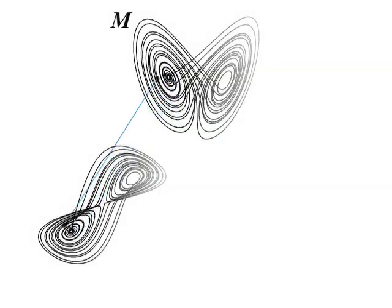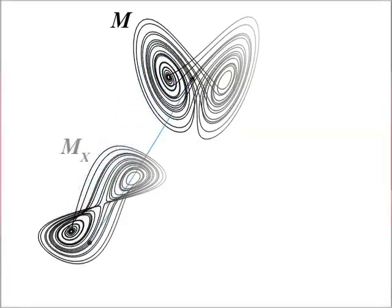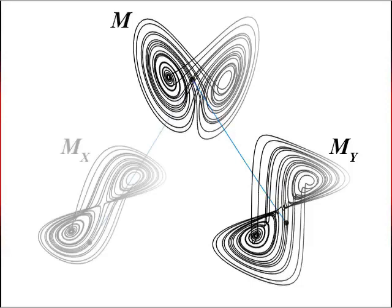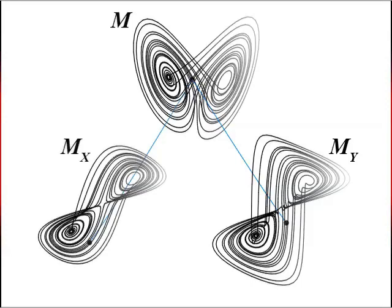This particular reconstruction is based on lags of variable x. If we now do the same for variable y, we find something similar. Here we see the original manifold M, as well as the shadow manifolds mx and my created from lags of x and y respectively.